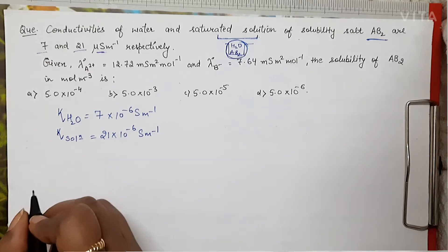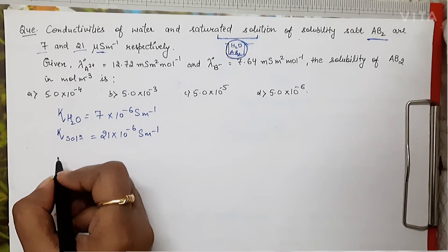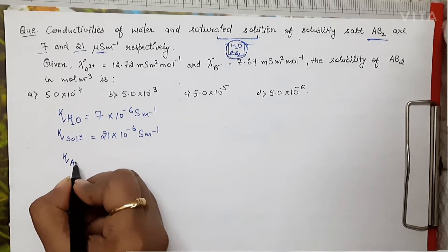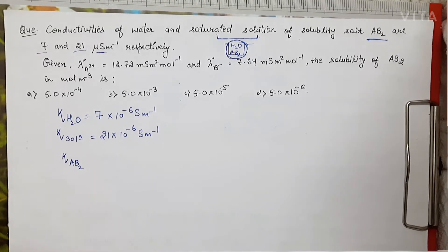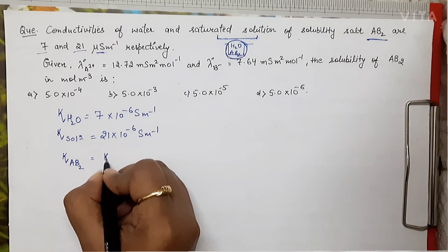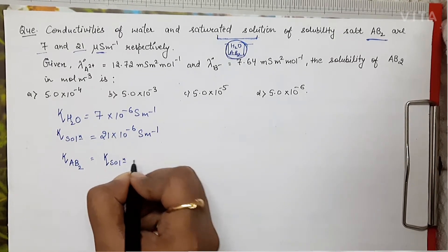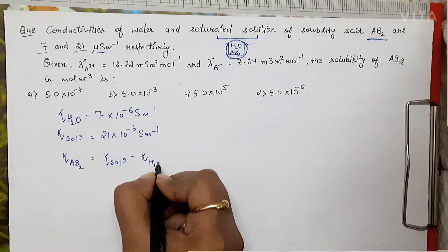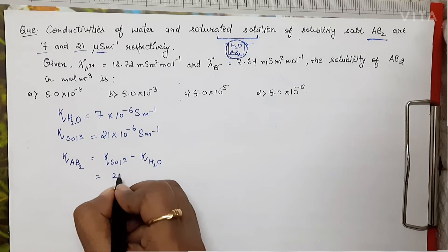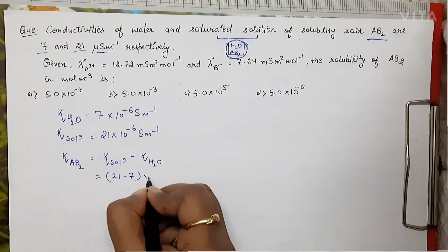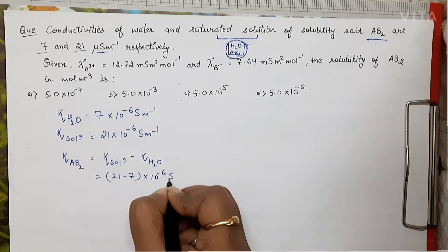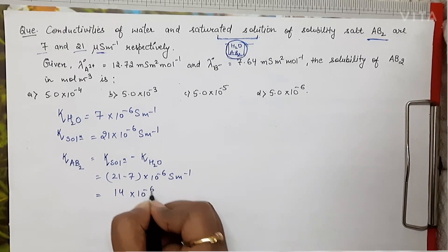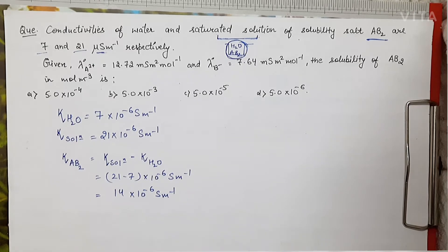To find the conductivity of the salt AB₂ alone, we subtract the conductivity of water from the overall solution conductivity: 21 minus 7, multiplied by 10⁻⁶ siemens per meter, which gives us 14 × 10⁻⁶ siemens per meter. This is the conductivity of the dissolved salt AB₂.